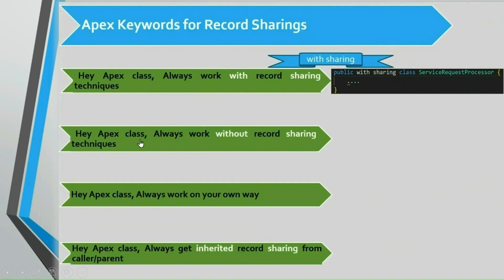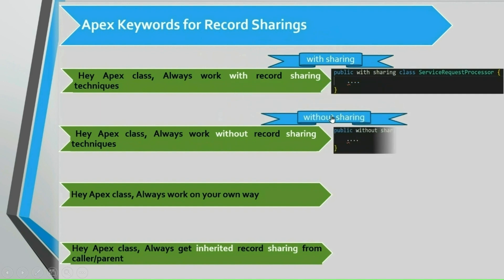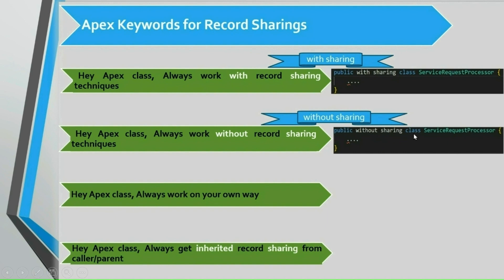In the same way, in order to instruct the Apex class to always work without applying record sharing techniques, we have a keyword called without sharing. The syntax is very similar — we just append without sharing before the class keyword. Once this class is tagged as without sharing, all SOQL queries written inside this class will work without applying sharing techniques, meaning all SOQL queries in this class work in system mode.